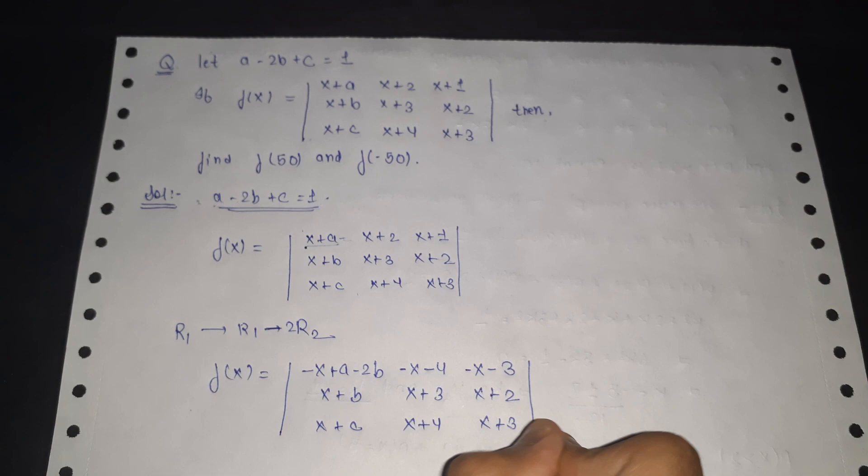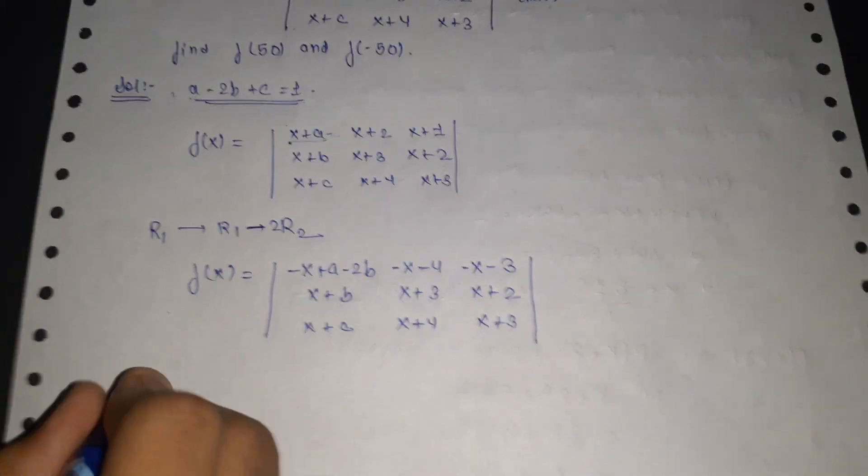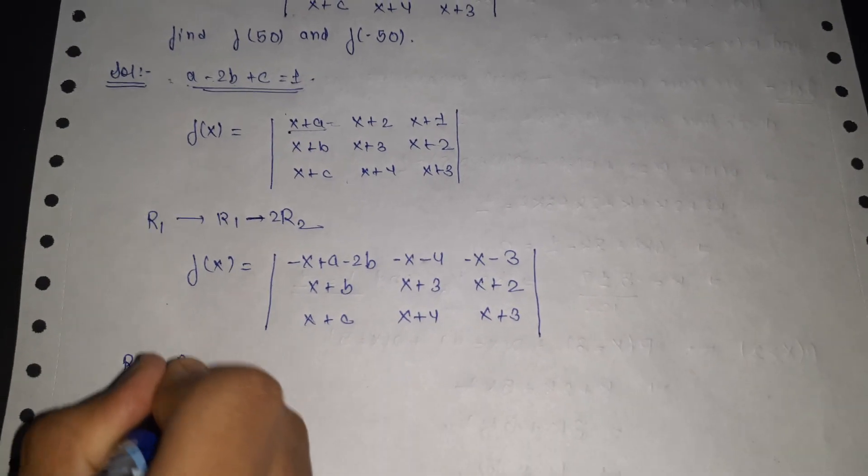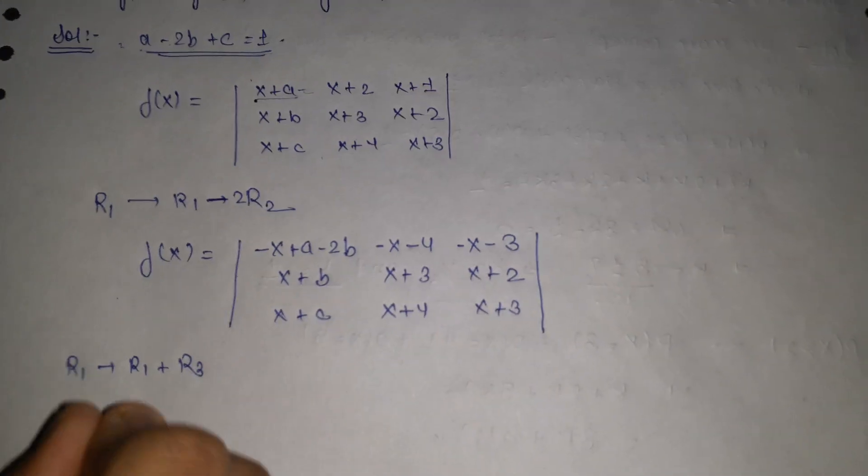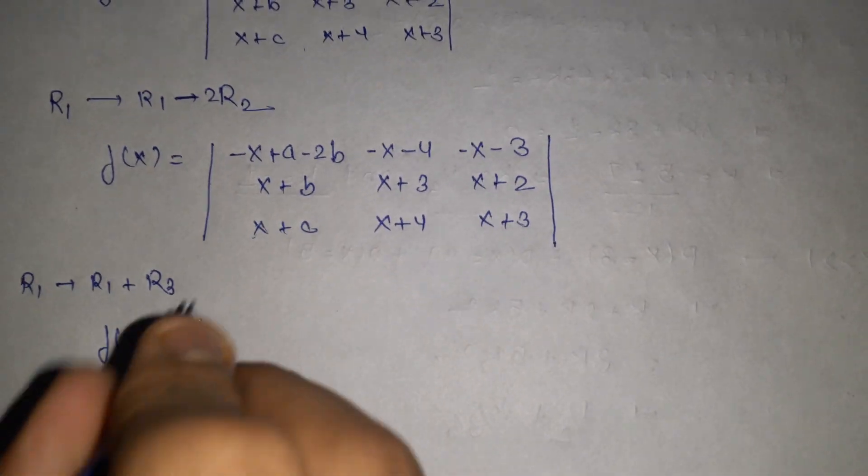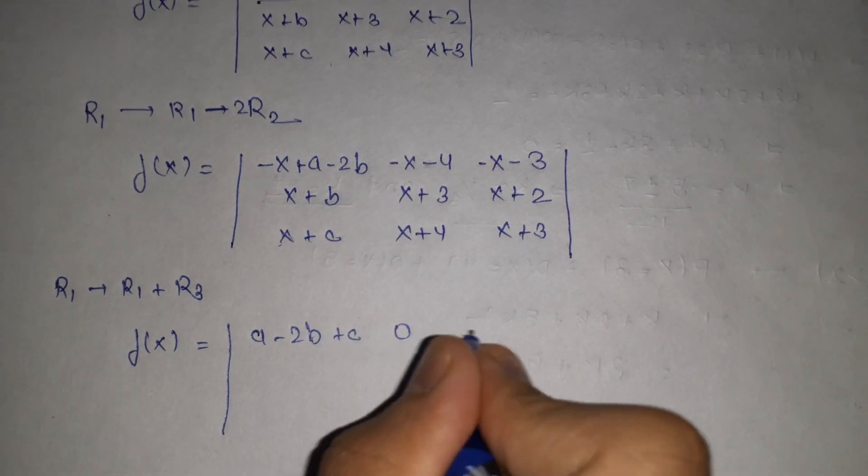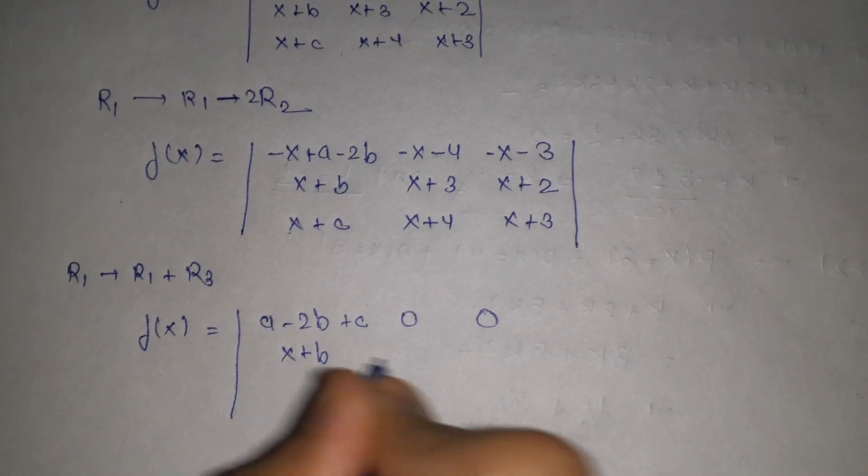In the second step, we will need plus c, so we will add R3. So here we get R1 goes to R1 plus R3. So we get f(x) as the x's are cancelled, so here a minus 2b plus c, here it gets 0, 0, and all other rows remain the same.